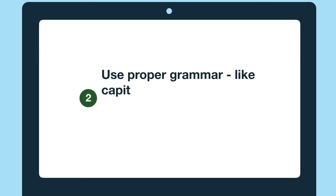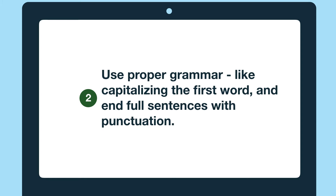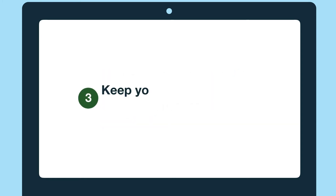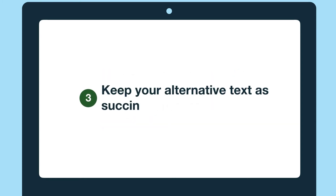Capitalize the first word and end full sentences with punctuation. The third tip is to keep your alternative text as succinct as possible — keep it to a few words and a sentence or two, only if necessary.